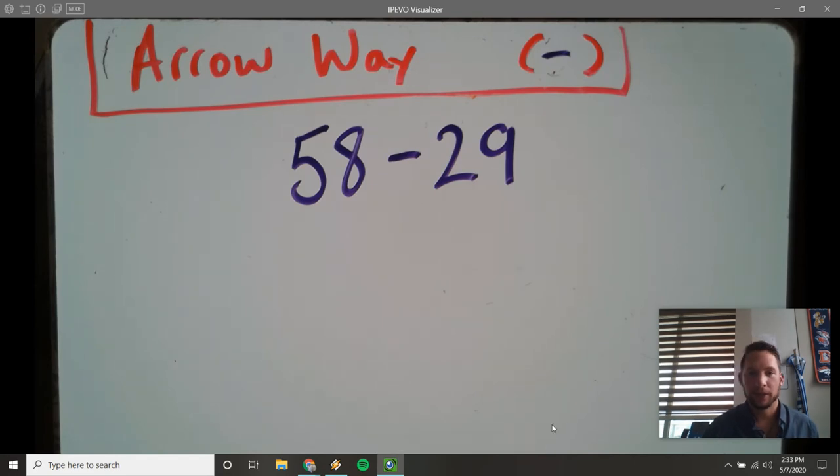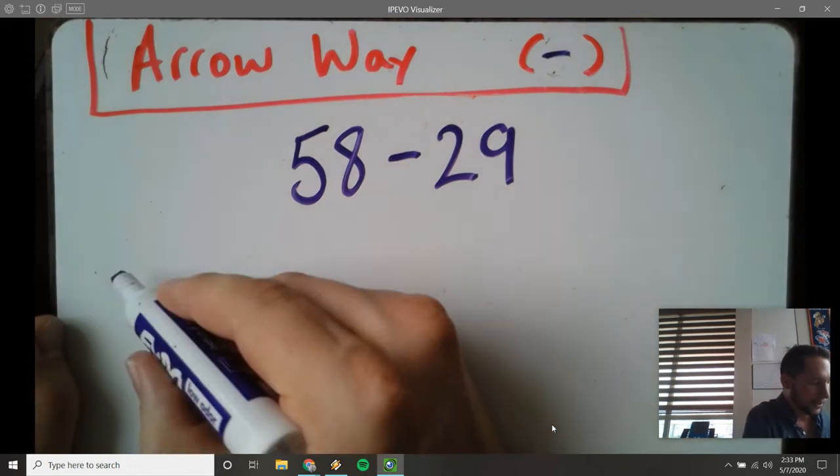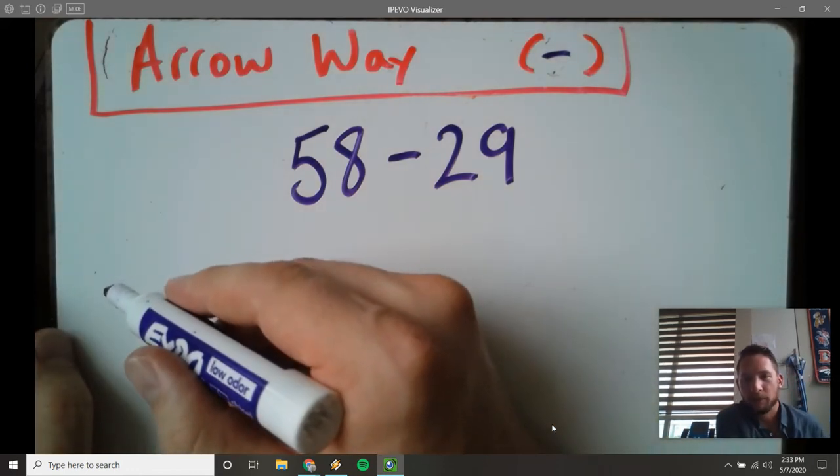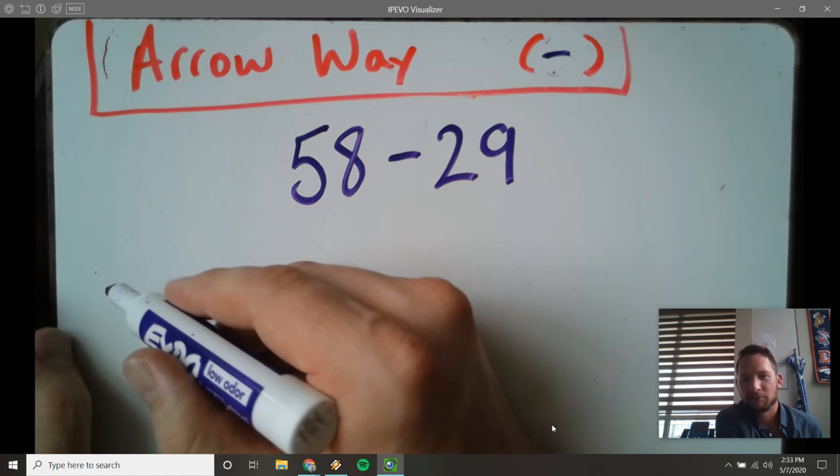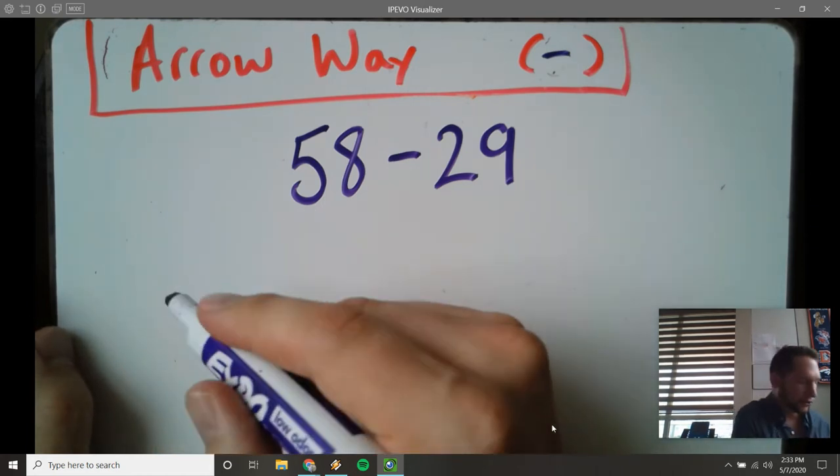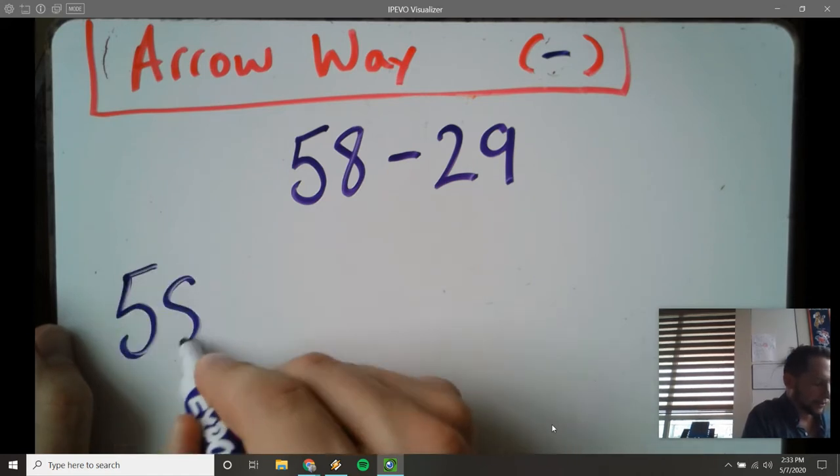Again, start with the big number. So I'm taking away in the arrow method, which is different than with the number line. In the arrow way it's taking away and adding to. So 58 minus 29, start with my biggest number, 58.